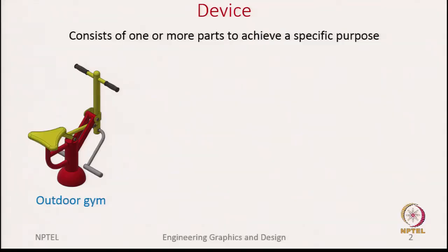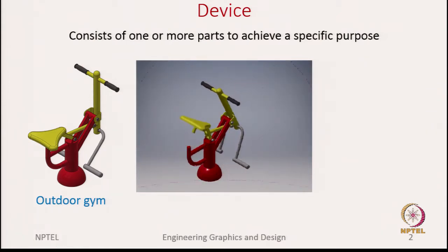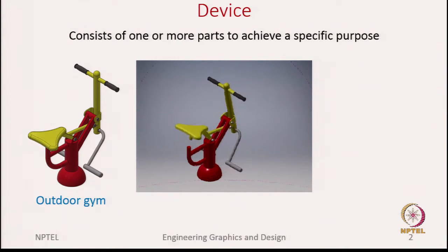Here are two examples of devices. One is an outdoor gym — most likely you should have seen these in parks. Essentially, using your arms and legs you can lift your own weight. To give clarity I have an animation: as you can see, once you are pulling the handle bar closer to you, the seat rises and the person sitting on it is raised up.